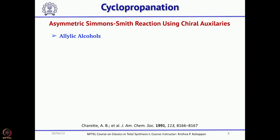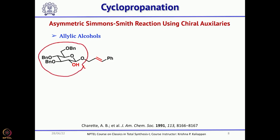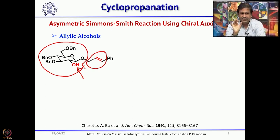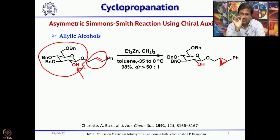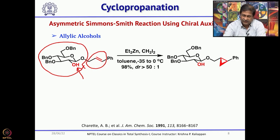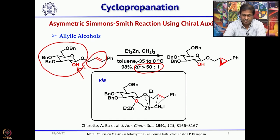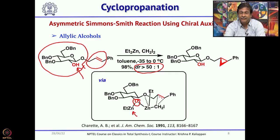The first asymmetric method was reported by Andy Charette. He used an allylic alcohol along with a chiral auxiliary starting from a sugar unit. The hydroxyl group on the sugar directed the cyclopropanation. He treated the compound with CH2I2 and diethylzinc, which in situ prepares the CH2ZnI species. This gave about 98% yield with a diastereomeric excess of 50:1 — a very interesting method. The mechanism shows the free hydroxyl group first forms a bond with zinc, coordinates with zinc and CH2I, and then intramolecularly delivers CH2 to the double bond.